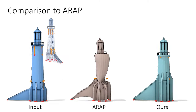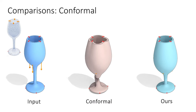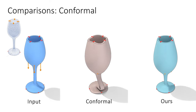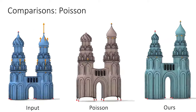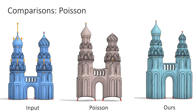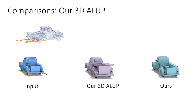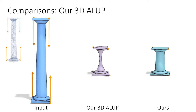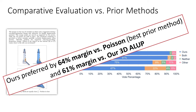We compare our results to those created by the popular ARAP method, to conformal shape deformation, to Poisson deformation, and to our baseline 3D ALEP reshaping. In a perceptual study, participants preferred our outputs over those produced by other algorithms by a large margin. They also strongly preferred our slippage-aware reshaping outputs over our baseline 3D ALEP.